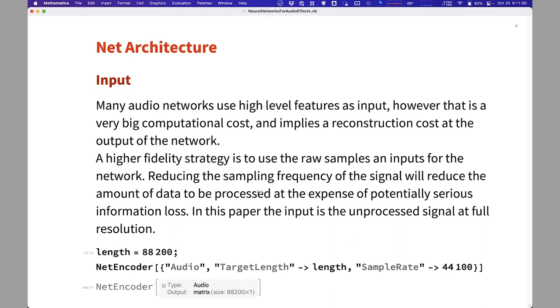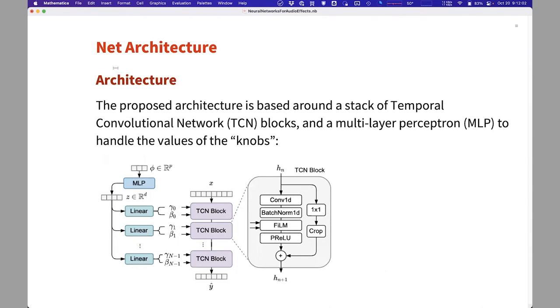Some networks reduce the sample rate of the signal to minimize the processing that needs to be done. However, again, that is a loss in quality of the result. We are doing this potentially to use in a recording studio. We want the best sound quality possible. So full sample rate, we do not make any compromises.